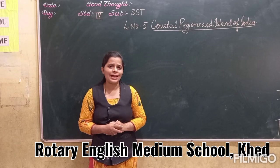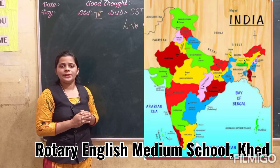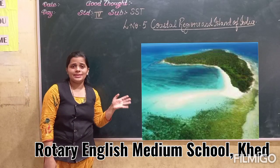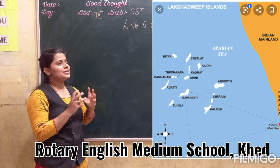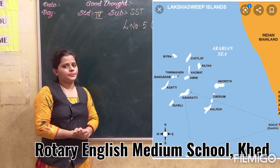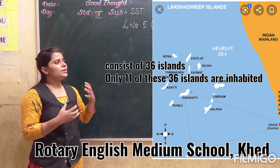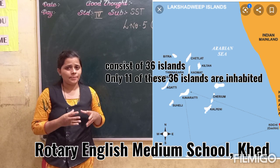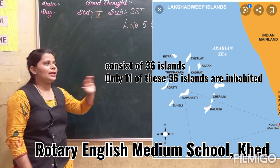Now let's proceed to the next island — Lakshadweep. Lakshadweep is a group of islands located in the Arabian Sea. These islands are flat and sandy. Lakshadweep consists of 36 island groups covering an area of 32 square kilometers. Out of these 36, only 11 islands are inhabited — meaning places where people can live.